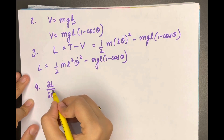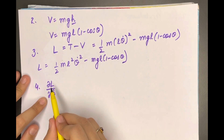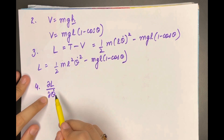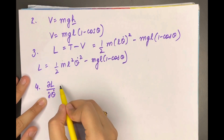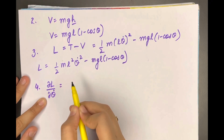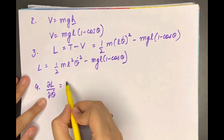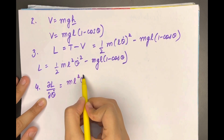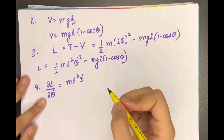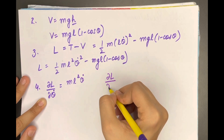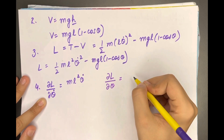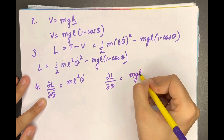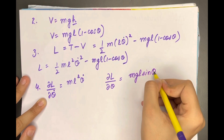The generalized coordinate is θ and the generalized velocity is θ̇. We calculate ∂L/∂θ̇, which equals ml²θ̇, and ∂L/∂θ, which equals −mgl·sinθ.